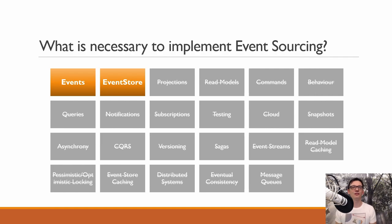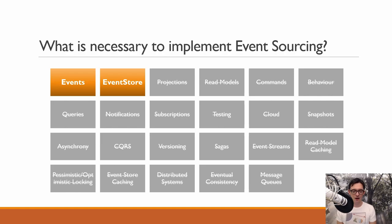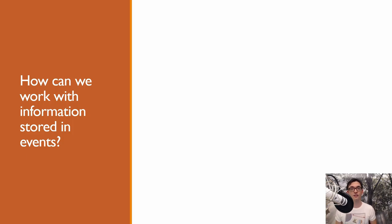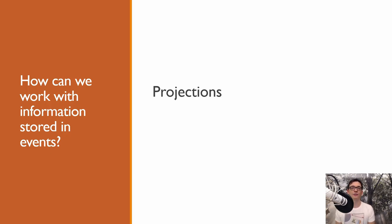We have just implemented the first version of our small but fully functional event store, and I think that's pretty cool. But now the question is: how can we actually work with the information stored in those events? The answer to that question is projections, and that's what we're going to talk about in the next episode of this event sourcing do-it-yourself video series. I hope you liked this episode — give me a subscribe, hit me up on Twitter, ask me any questions. See you next time, bye.